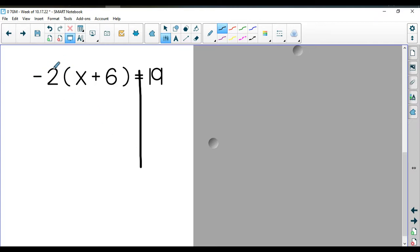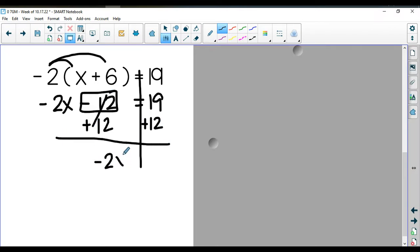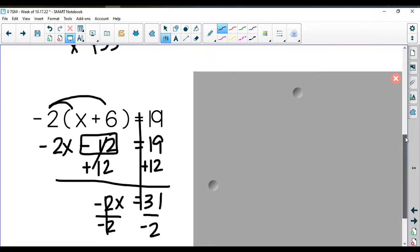So again, two different strategies that you can have here. I'm going to go ahead and just distribute. So I have negative 2x, and negative 2 times a positive 6 is going to give me negative 12, is equal to 19. I'm going to add 12 to both sides because this is my armadillo. That's going to leave me with negative 2x is equal to 31. My final step is to divide by negative 2, which will leave me with x is equal to negative 15.5.